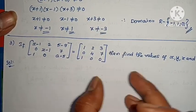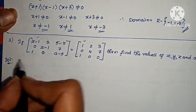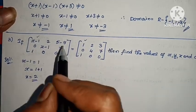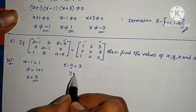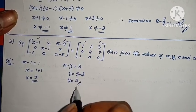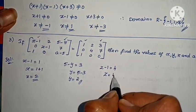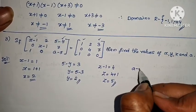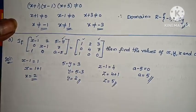If this matrix equals this matrix, then find the values of x, y, z, and a. Equating corresponding elements: x - 1 = 1, so x = 2. Then 5 - y = 3, so y = 2. Next, z - 1 = 4, so z = 5. And a - 5 = 0, so a = 5. The problem is complete by equating the elements.